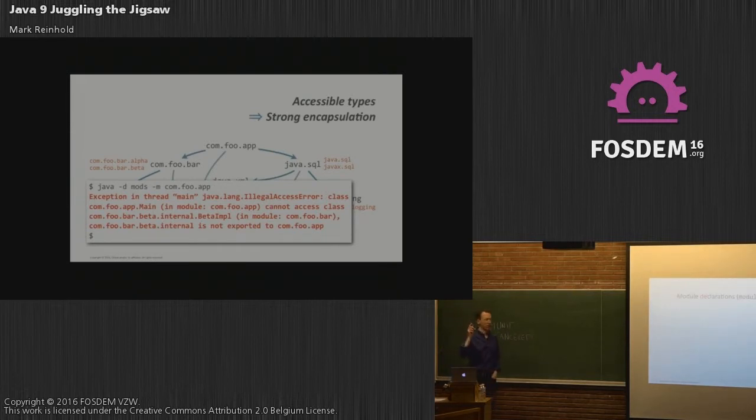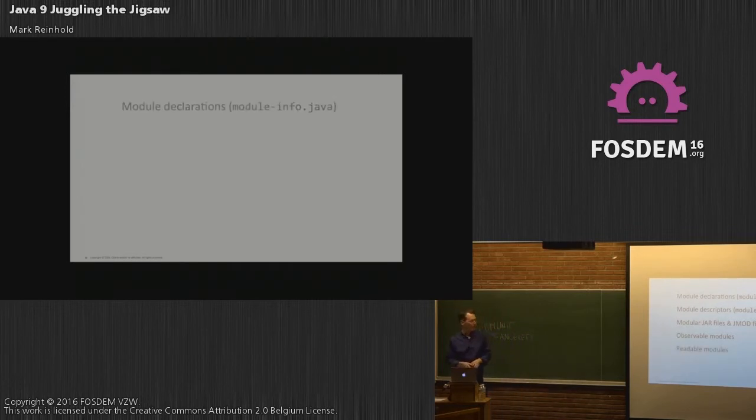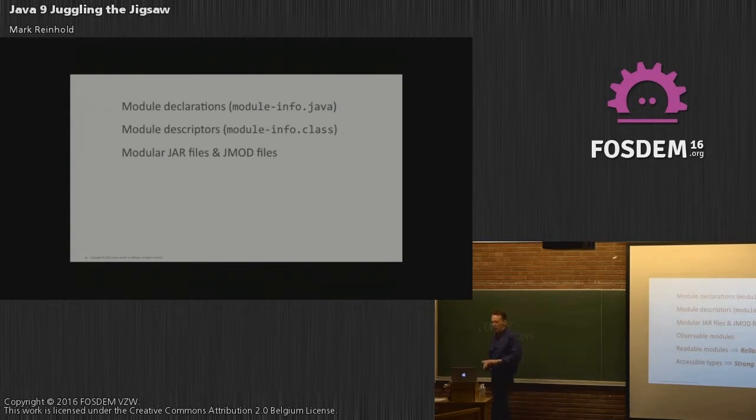Okay. So to recap the essence of the module system, we have module declarations written in the Java programming language. They're compiled into module info.class files. Modules are packaged into modular jar files or if you're working on the JDK or something else that has to have native code and stuff in it, we use jmod files. We have the notion of observable modules. We use the concept of readable modules to construct a module graph that gives us reliable configuration. We interpret export statements to determine accessible types which give us strong encapsulation. And these two properties are enforced uniformly at both compile time and run time. So the configurations of large systems are essentially correct by construction or at least way more correct than they are today.